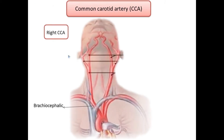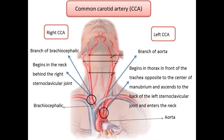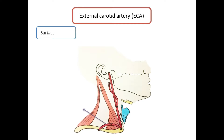The right common carotid artery is a branch of the brachiocephalic artery; it begins in the neck behind the right sternoclavicular joint. The left common carotid artery is a branch of the arch of the aorta; it begins in the thorax in front of the trachea, opposite a point a little to the left of the center of the manubrium. In the neck, both arteries have a similar course. At the level of the upper border of the thyroid cartilage, the artery ends by dividing into the external and internal carotid arteries.